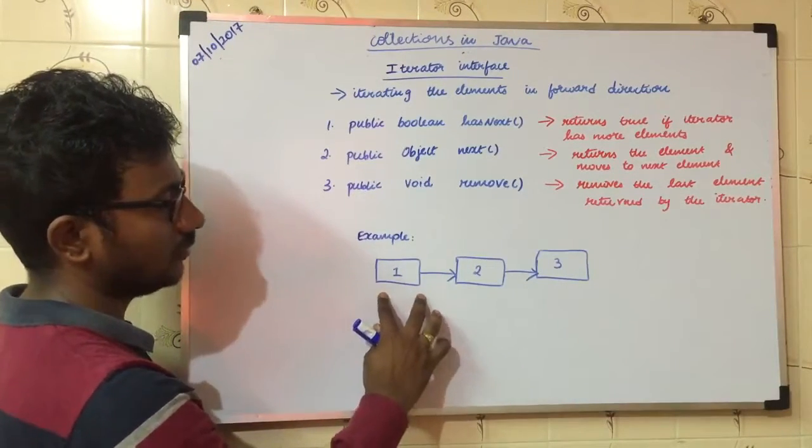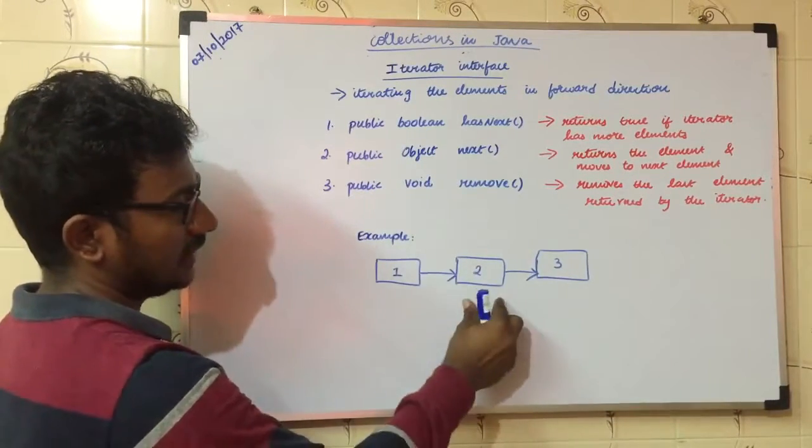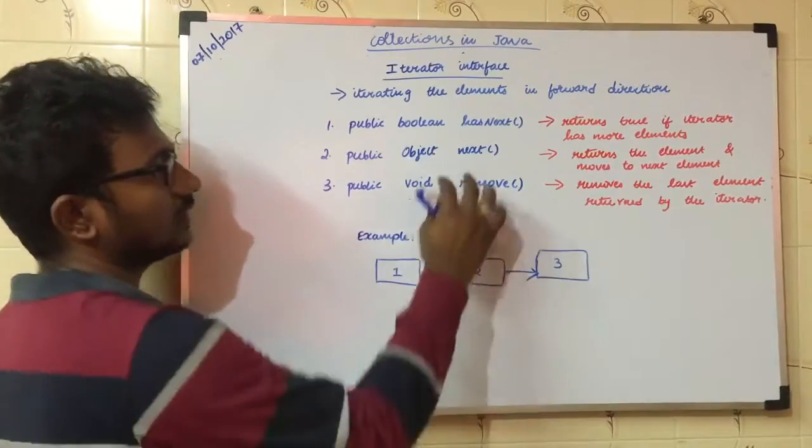When you call next(), the object is a pointer. Pointer moves right. After calling next(), it returns the element and the pointer moves to the next position. That's the usage of next().